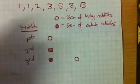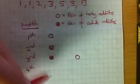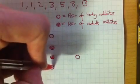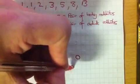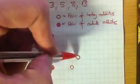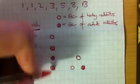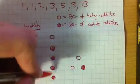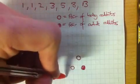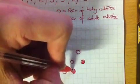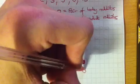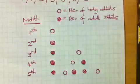So we'd have two pairs of rabbits in the third month. In the fourth month, we'd still have our original pair of adult rabbits, and because another month's passed they'd have had another pair of baby rabbits. And this pair of baby rabbits from the third month would now be adults. Then in the fifth month, this pair of adult rabbits would still be going and would have had another pair of baby rabbits, those previous babies would now be adults, and the other adult pair would still be there but would have had a pair of baby rabbits as well.